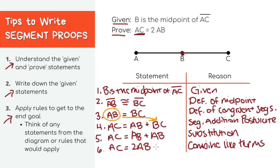And that's it. We've successfully reached the expression we're trying to prove, which is the measure of AC is two times the measure of AB.